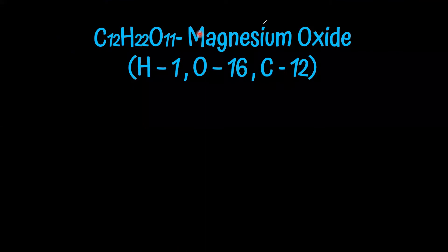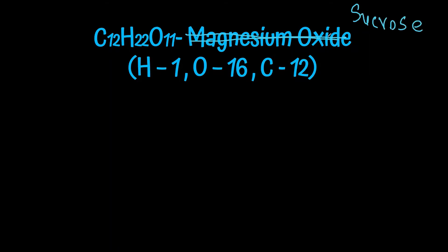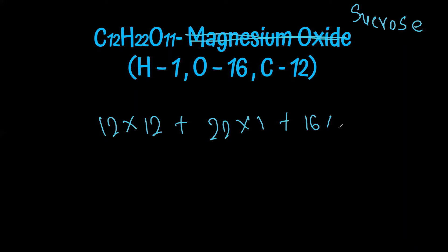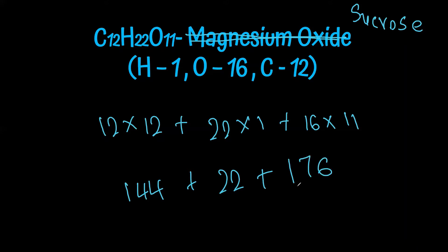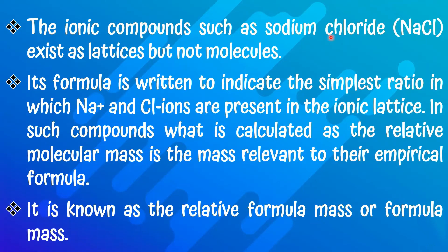The final problem in Activity 1 is sucrose, C12H22O11. We calculate: 12 carbon atoms (12×12 = 144), 22 hydrogen atoms (22×1 = 22), and 11 oxygen atoms (16×11 = 176). Adding these: 144 + 22 + 176 = 342. The relative molecular mass of sucrose is 342.